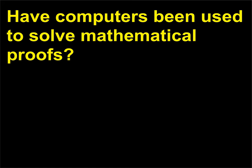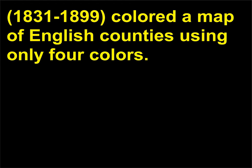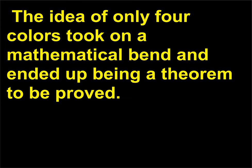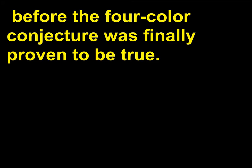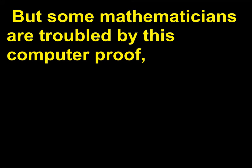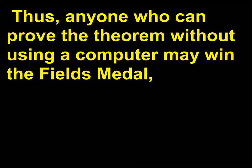Have computers been used to solve mathematical proofs? This idea was first presented in 1852 when Francis Guthrie (1831–1899) colored a map of English counties using only four colors. The idea of only four colors took on a mathematical bent and ended up being a theorem to be proved. It took until 1976, with the help of modern computers, before the four-color conjecture was finally proven to be true. But some mathematicians are troubled by this computer proof, feeling that the theorem is so easy to understand that it should have been proven by hand. Anyone who can prove the theorem without using a computer may win the Fields Medal — the math equivalent of the Nobel Prize.